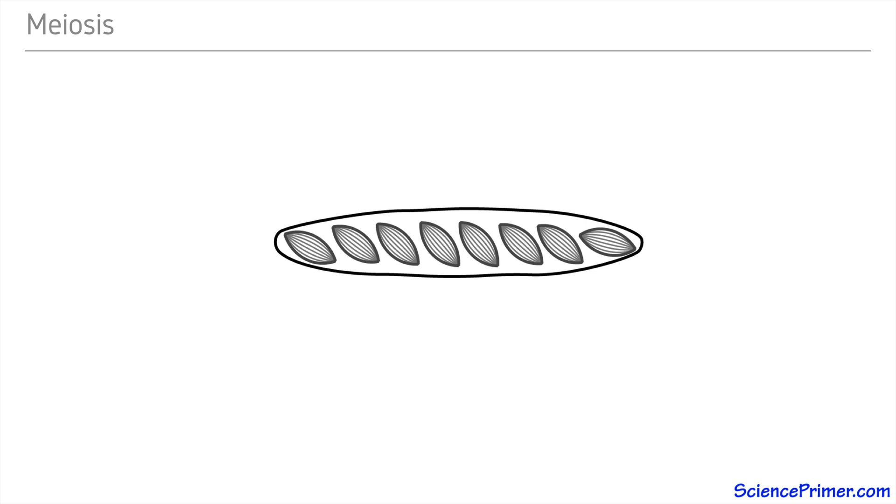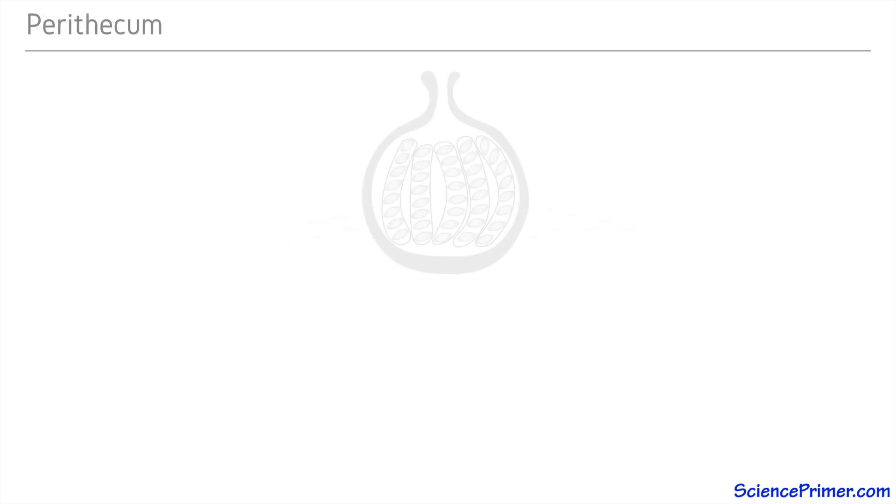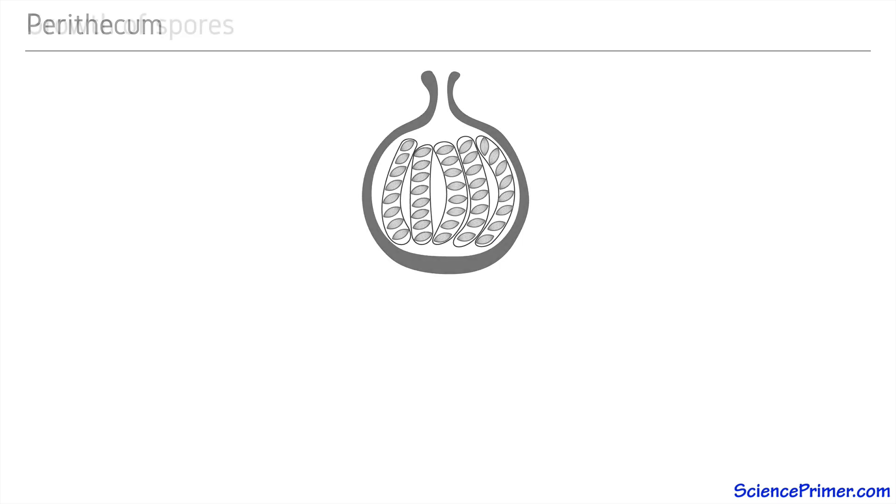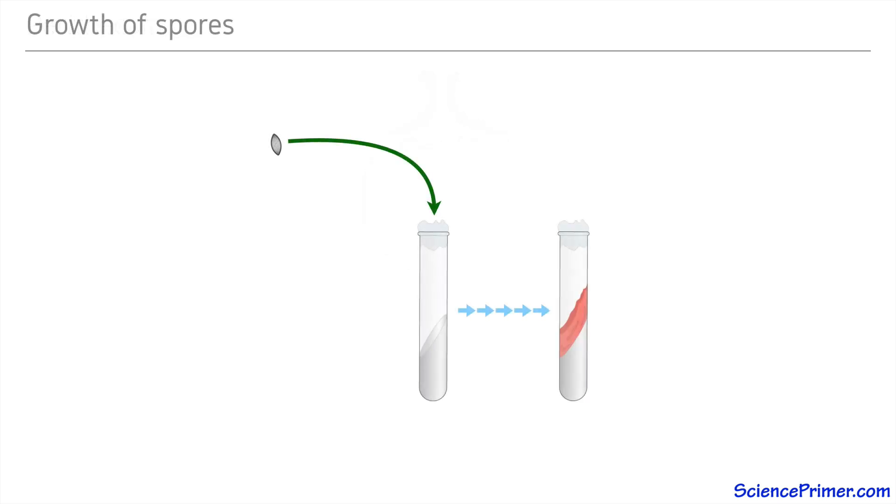Sexual reproduction results in bunches of asci growing together in a fruiting body called a perithecia. Cultures are grown by taking individual spores, placing them in appropriate culture conditions, and allowing them to grow. Cultures grow quickly, allowing for rapid screening of many spores.